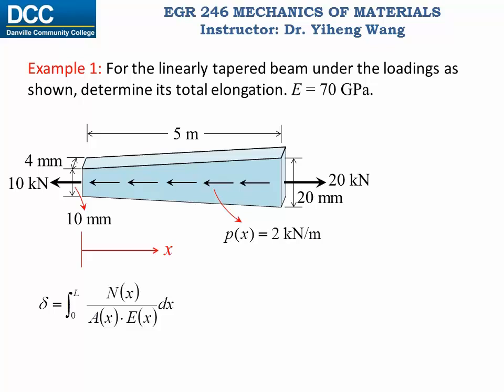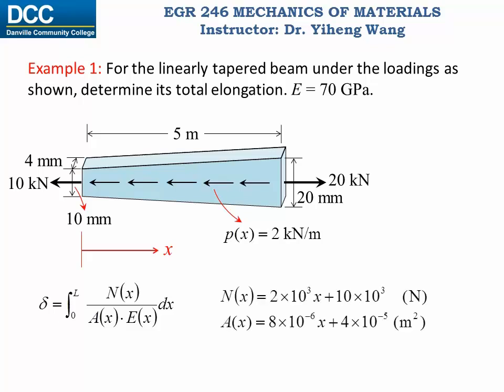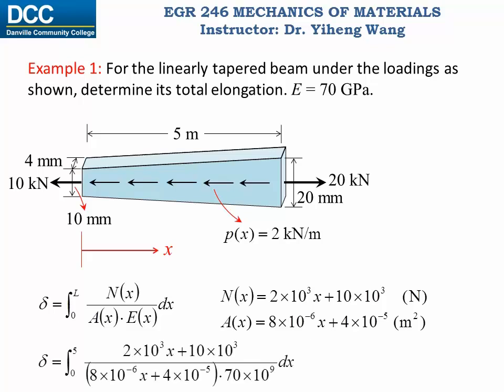Now we know both the internal normal force and cross-sectional area as functions of x. Young's modulus is still a constant. We substitute them into the equation and integrate from x equals 0 to x equals the full length of 5 meters, and get 1.786×10⁻² meters, which is about 18 millimeters. That is the total elongation of this beam under the axial loadings.